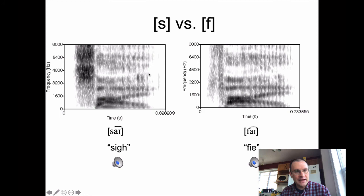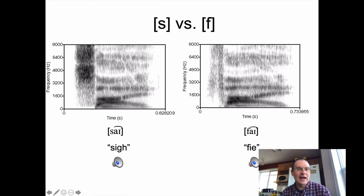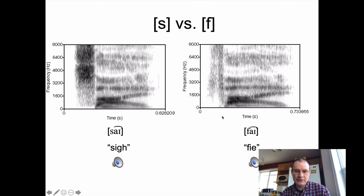Looking at S versus a non-sibilant fricative like F in a spectrogram: S shows high-intensity, high-frequency energy that kind of drops off down at the bottom. For F, you tend to get less energy across the board, and it's more or less evenly distributed across the frequency range — what's called a diffuse spectrum. There might be a little more energy where it's next to vowel formants as it merges into the vowel, but basically F has a diffuse, weak spectrum overall.